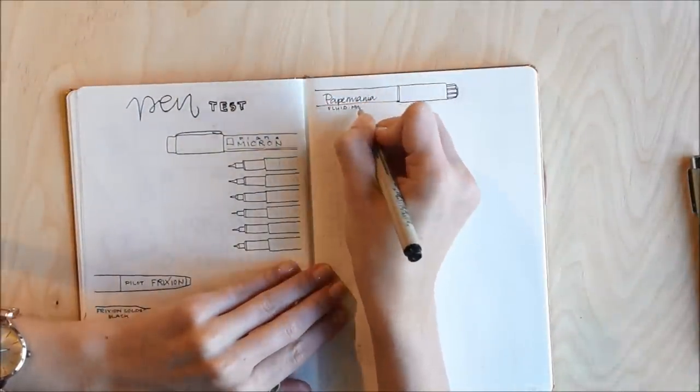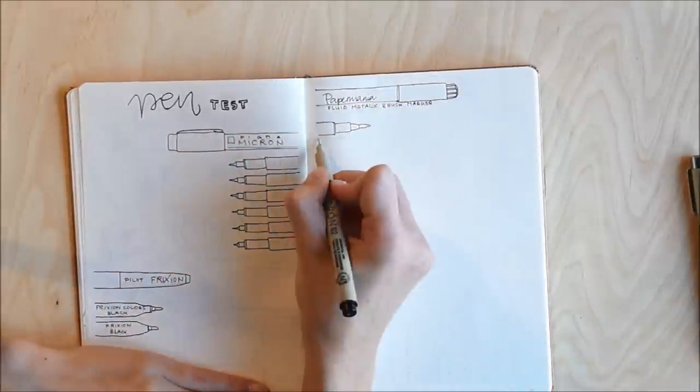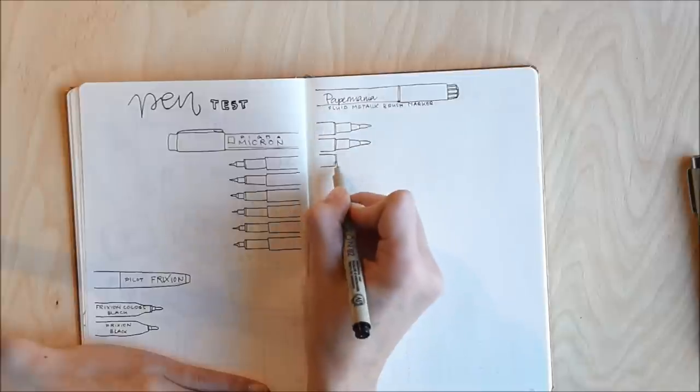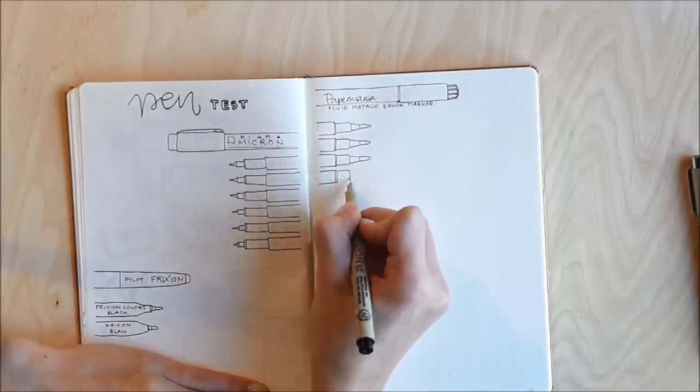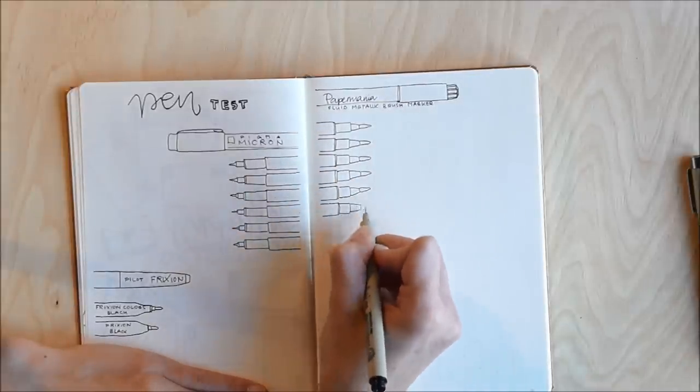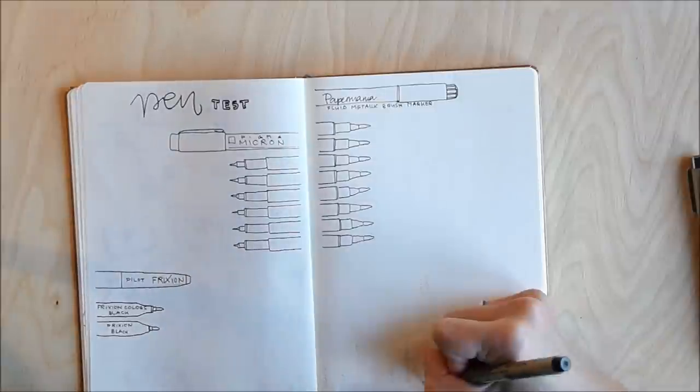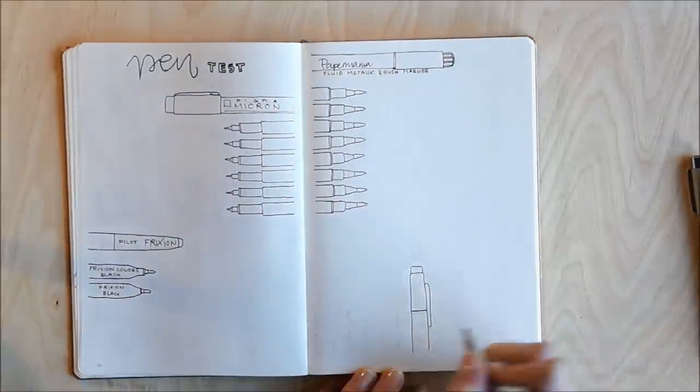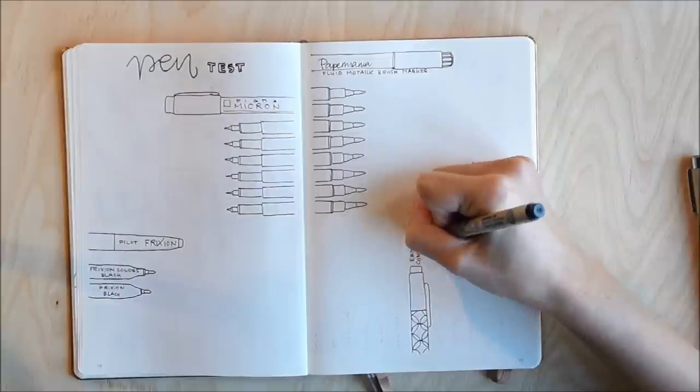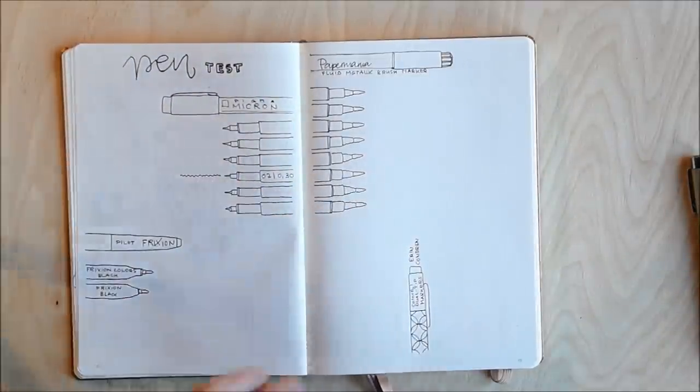Then below that are two Pilot FriXion pens which are erasable. On the right side I added some Paper Mania brush markers. They have metallic colors. And on the bottom I added the Erin Condren dual tip markers which I have in the colorful version as well as in the pastel version.